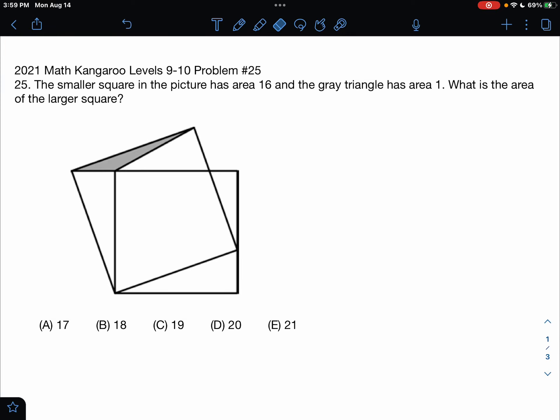This is a 2021 Math Kangaroo Levels 9-10 problem number 25. The smaller square in the picture has area 16 and the gray triangle has area 1. What is the area of the larger square?